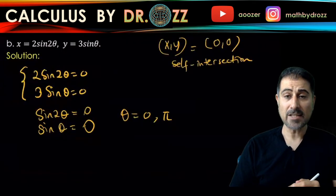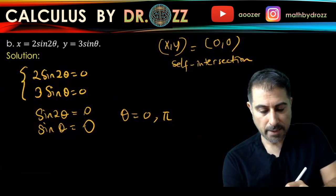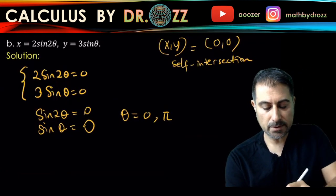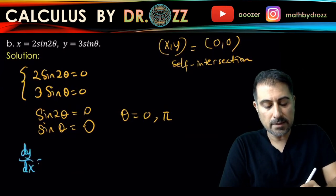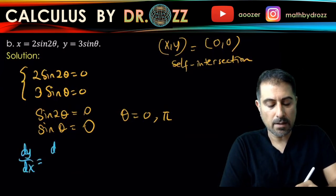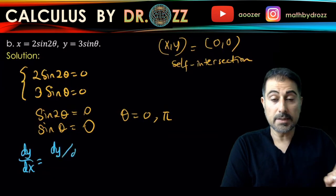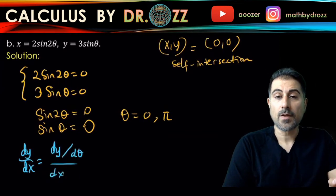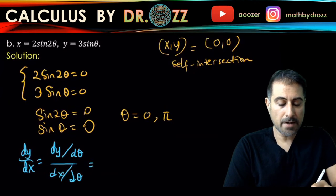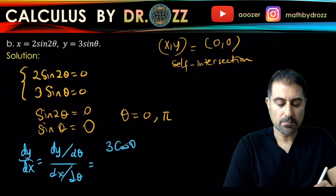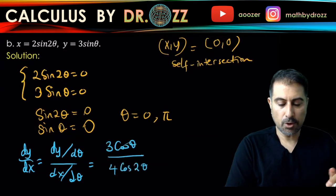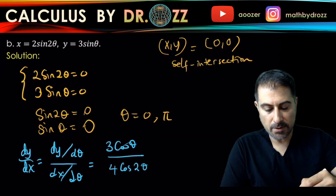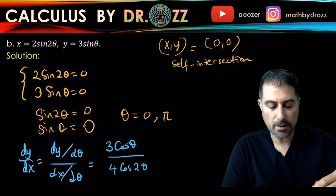Let's check out dy over dx here, and I'm going to use the same trick of dividing the top and the bottom by d theta. Now I can take the individual derivatives of y and x. That gives us 3 cosine theta over 4 cosine 2 theta.